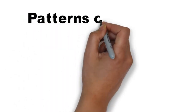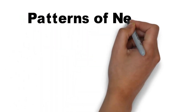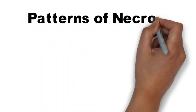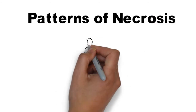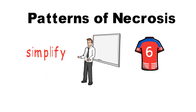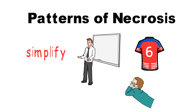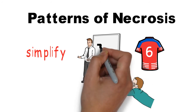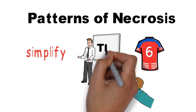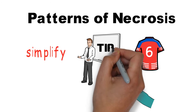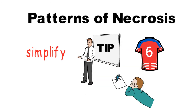The pattern of tissue necrosis is an important aspect of pathology basics. Today I will try to simplify the six patterns so that you can easily understand and recall during exams. Watch till the end to get a useful tip to remember all the types.